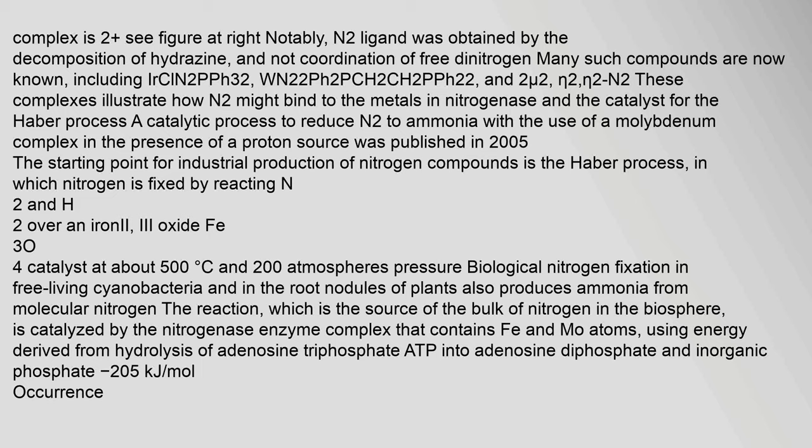N2 forms a variety of adducts with transition metals. The first example of a dinitrogen complex had the N2 ligand obtained by the decomposition of hydrazine, not by coordination of free dinitrogen. Many such compounds are now known. These complexes illustrate how N2 might bind to the metals in nitrogenase and the catalyst for the Haber process. A catalytic process to reduce N2 to ammonia with the use of a molybdenum complex in the presence of a proton source was published in 2005. The starting point for industrial production of nitrogen compounds is the Haber process, in which nitrogen is fixed by reacting N2 and H2 over an iron catalyst at about 500°C.